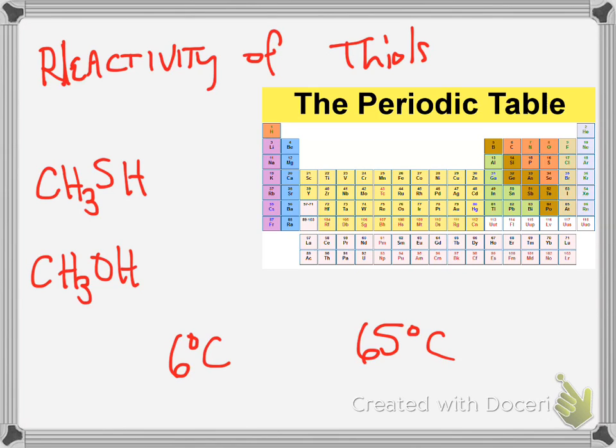Boiling point is just a physical property that talks about the intermolecular interactions. The higher the boiling point, the more intermolecular interactions holding the molecules together. You have to add more energy to go from the liquid phase to the gas phase. 6 degrees Celsius belongs to methanethiol, and 65 belongs to methanol.